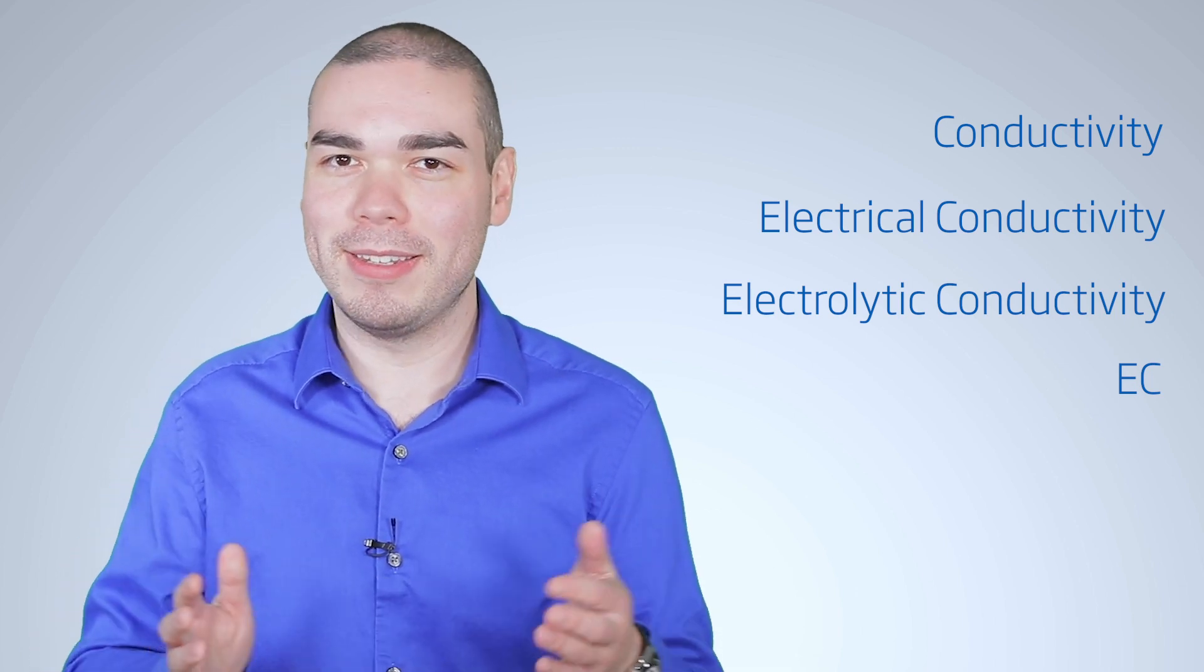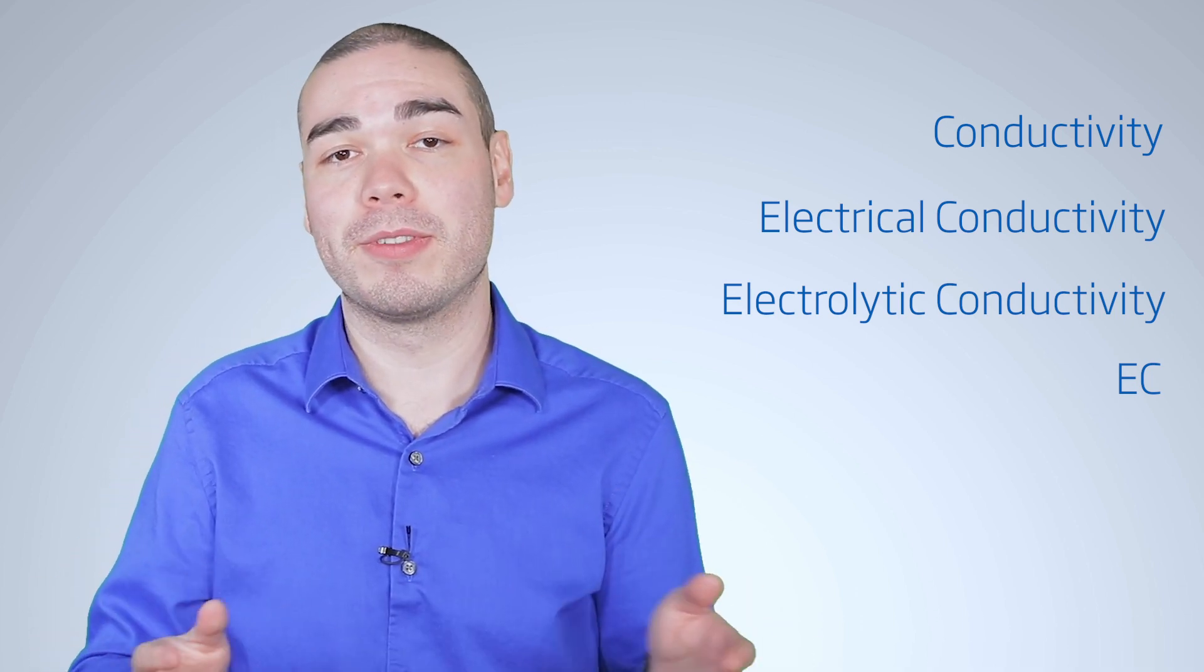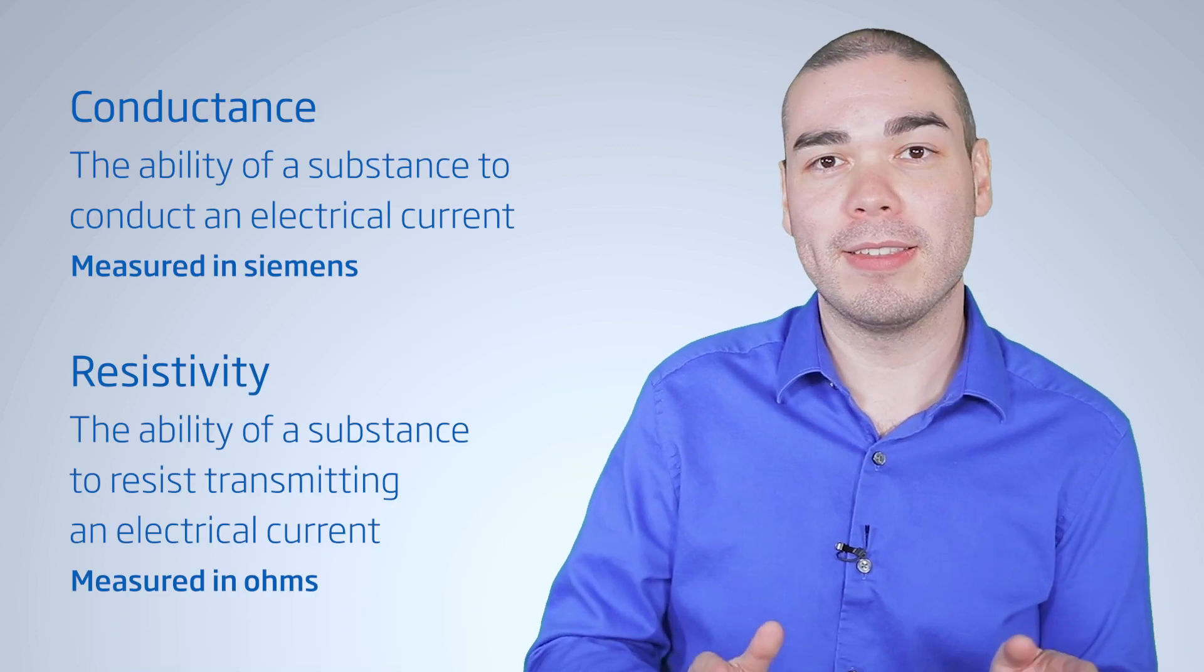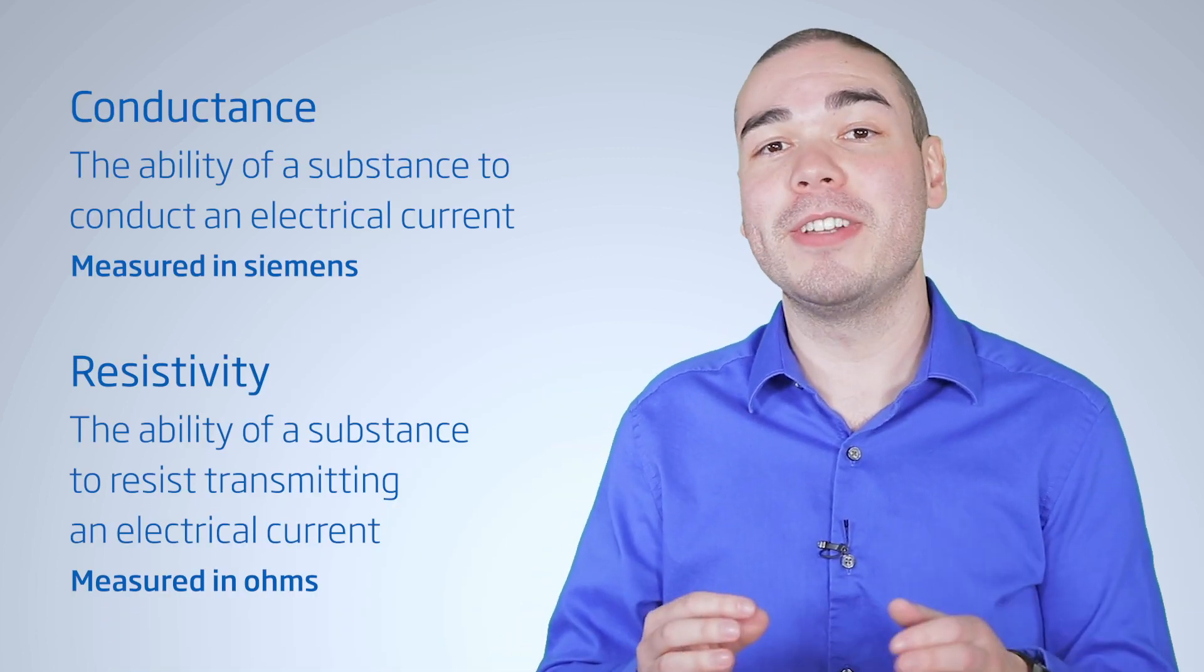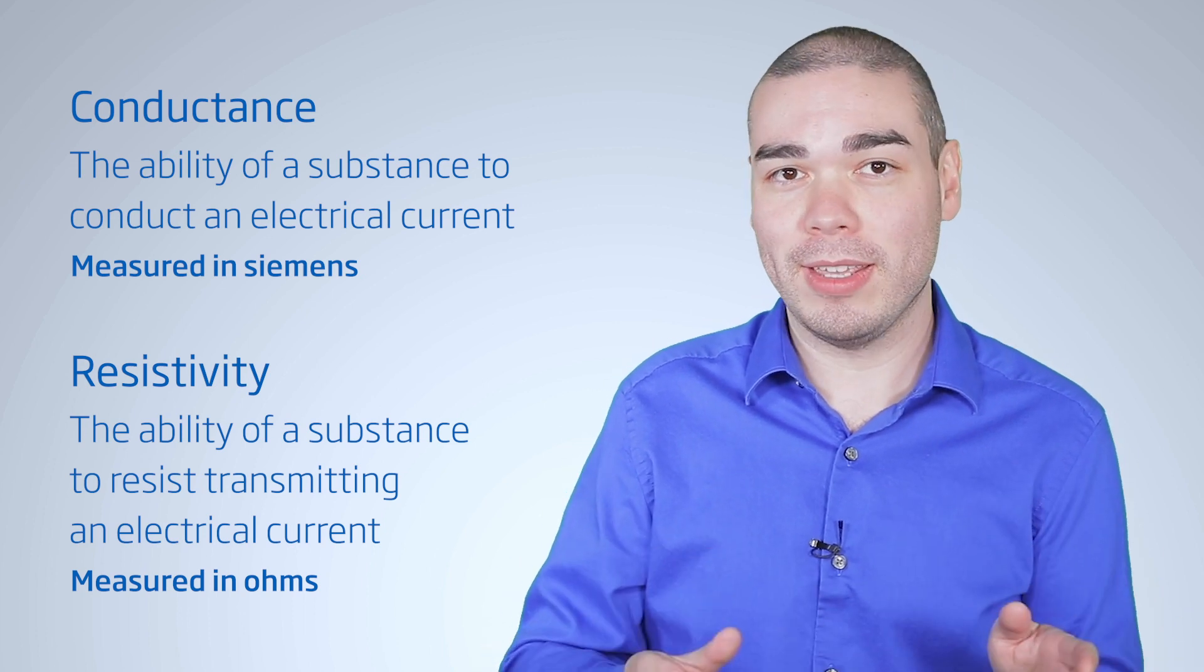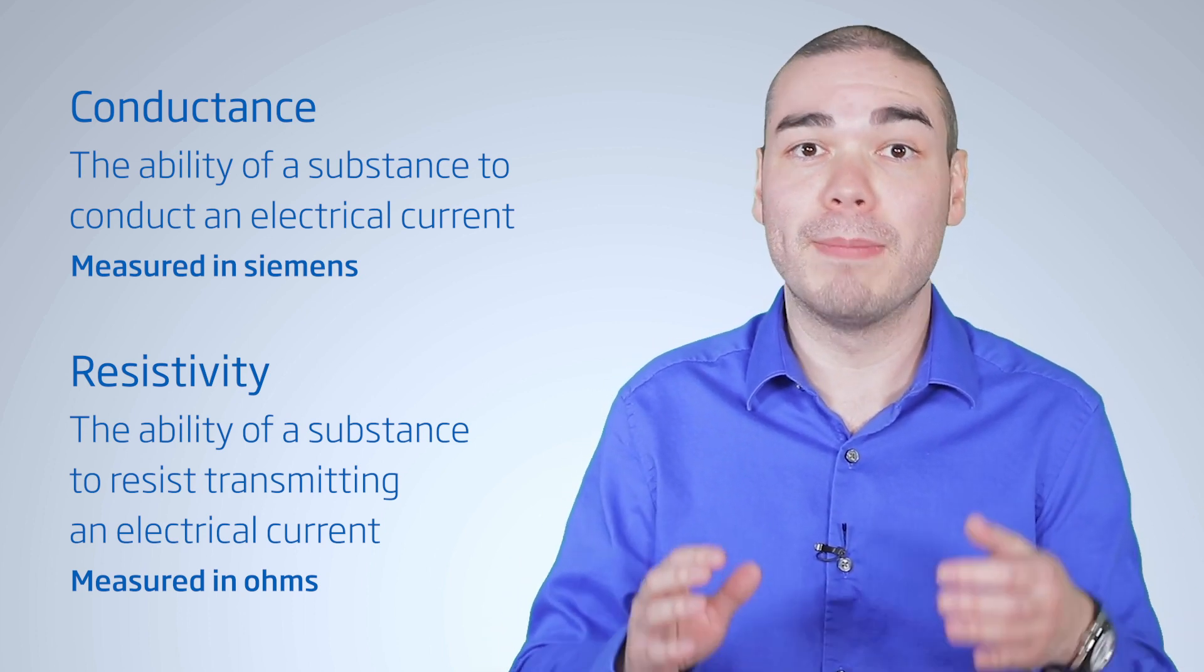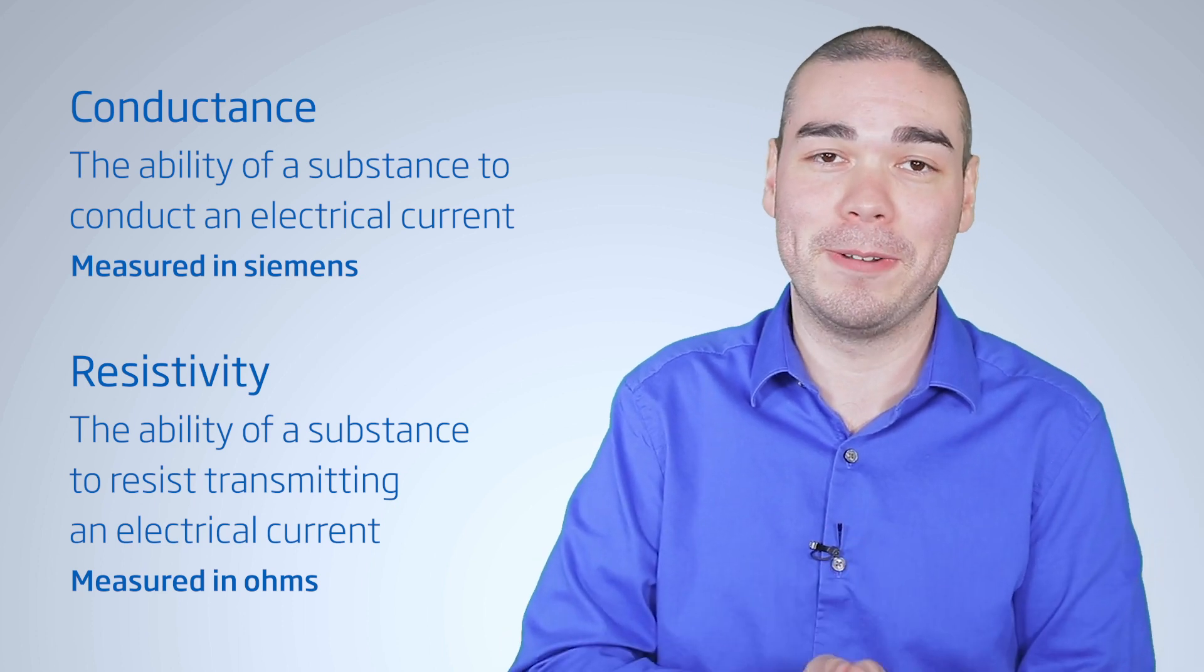Before going into the EC definition, there are a few other terms to know first. Conductance is the ability for a substance to conduct an electrical current and is measured in Siemens. Resistivity is the inverse of conductance, the ability of a substance to resist transmitting an electrical current.